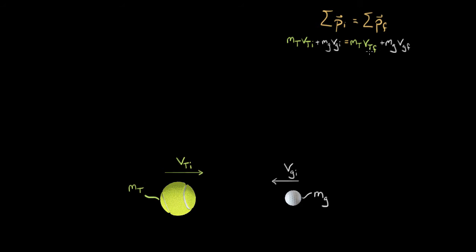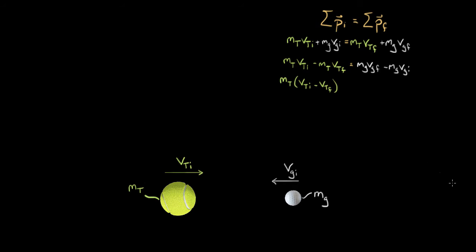When solving symbolically, you want to simplify as much as possible. I'll bring the mt term over to the left and the mg term over to the right, giving mt·(vti − vtf) on the left side, and mg·(vgf − vgi) on the right side by pulling out common factors. It might not be obvious why we're doing this, but this is going to be a crucial step — trust me, it will make our lives much better in a moment.